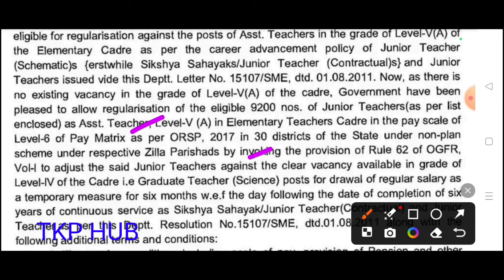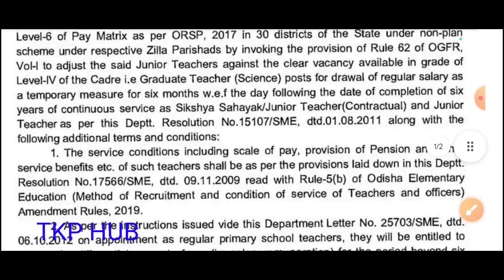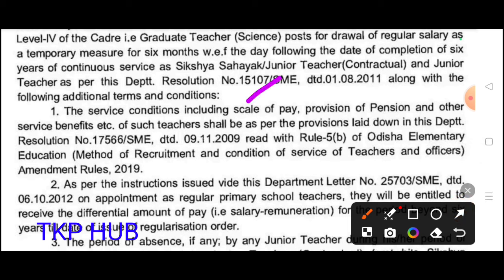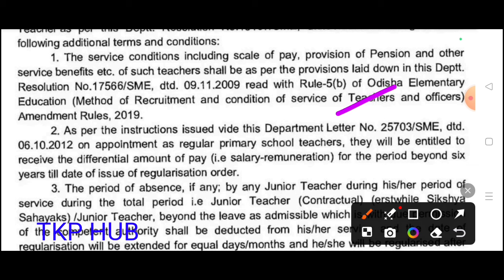Junior teachers against the clear vacancy available in grade level 4 of the cadre, that is a graduate teacher post, shall draw regular salary as a temporary measure for six months. The same regular salary drawn beyond six years — the complete service condition includes scale of pay, provision of pension, and other service benefits. Such teacher shall be as per the provision laid down in the department resolution issued by the department letter, and they will be entitled to receive the differential amount of pay and salary for the period beyond six years till the date of issue of the regulation order.